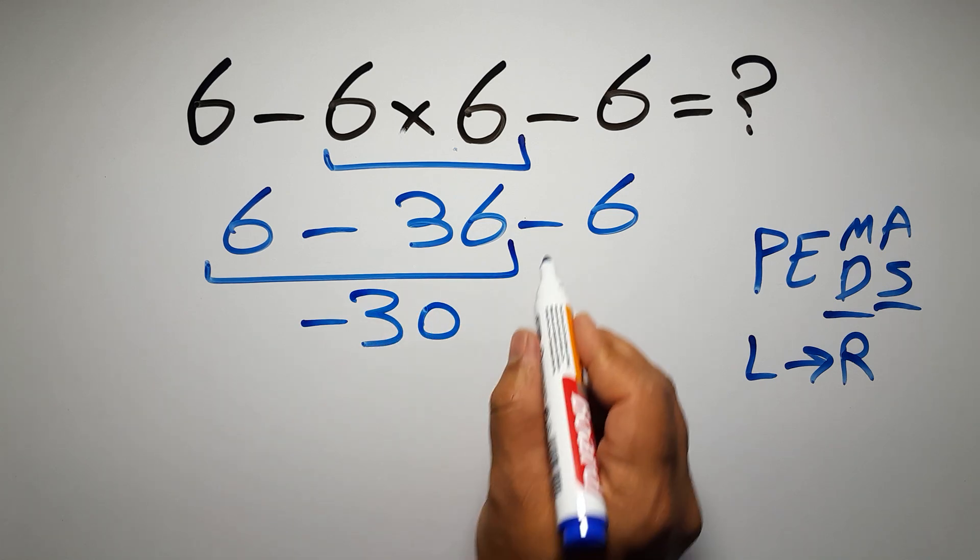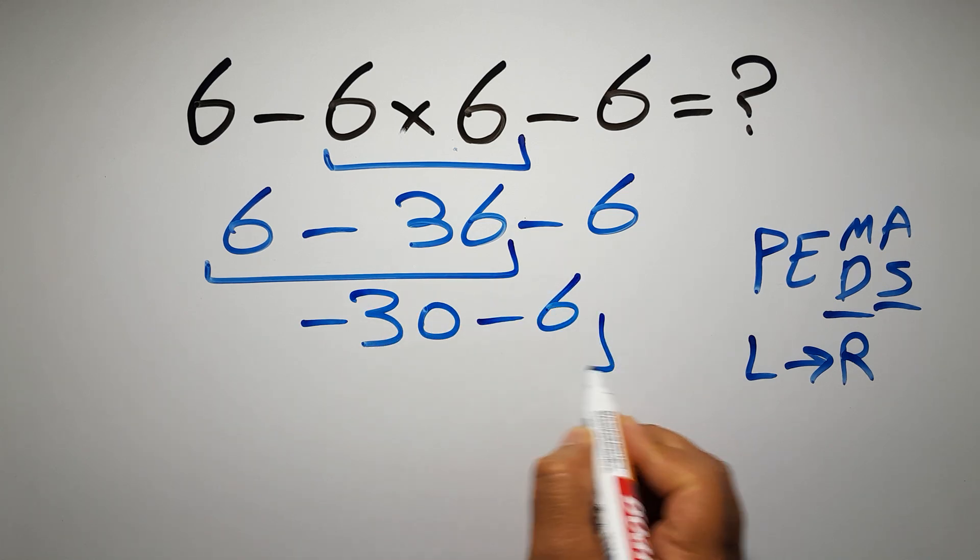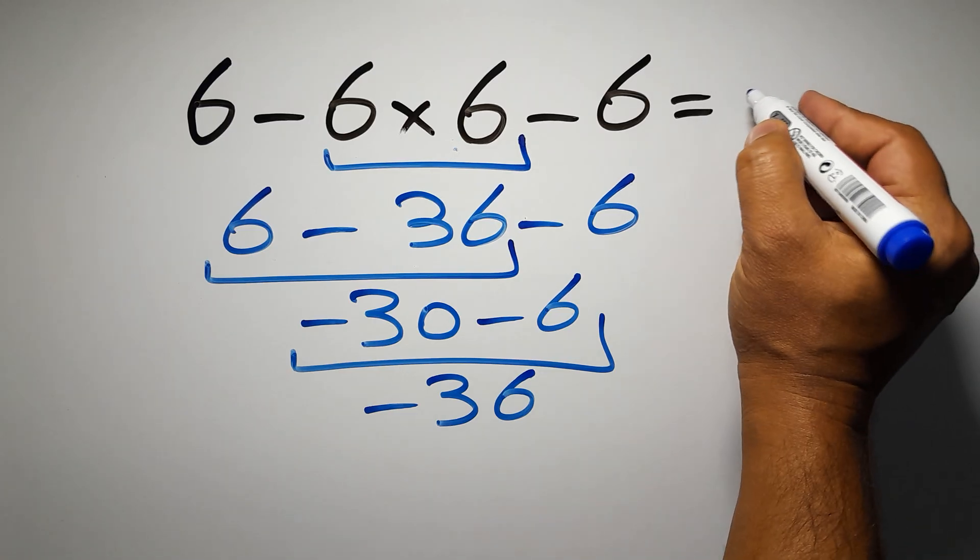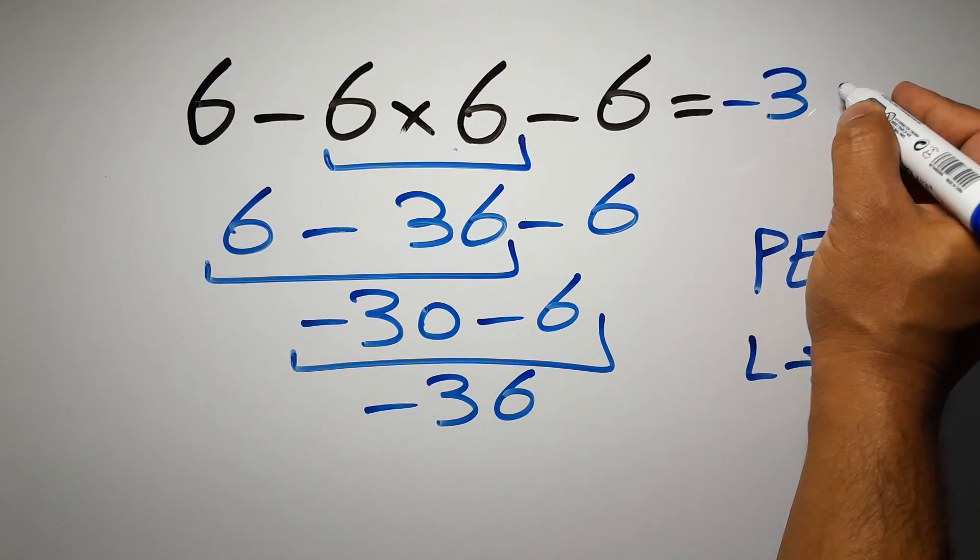6 minus 36 gives us negative 30. So negative 30 minus 6, which equals negative 36. This is our final answer to this problem: negative 36.